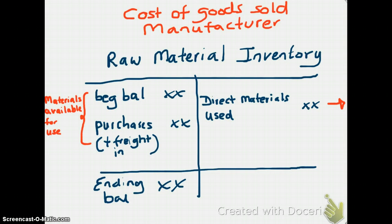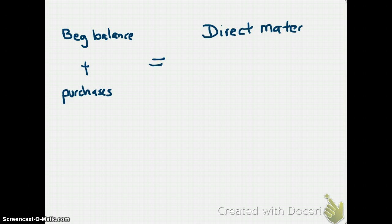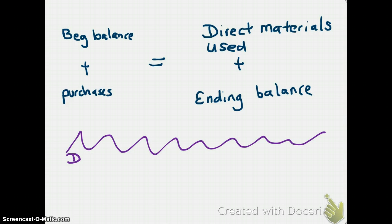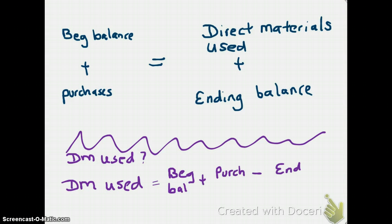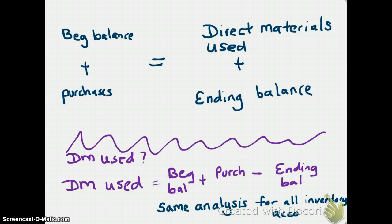To summarize: beginning balance of raw materials plus purchases equals direct materials used plus ending balance. So if asked to calculate direct materials used, it equals beginning balance plus purchases minus ending balance. You use the same methodology for all your inventory accounts.